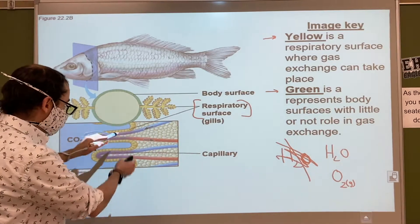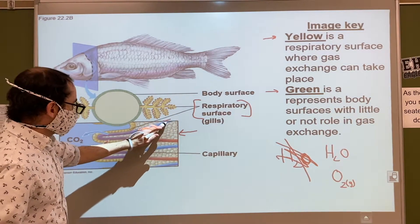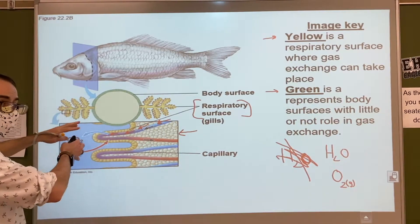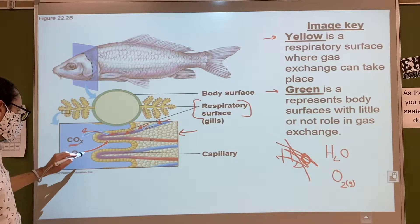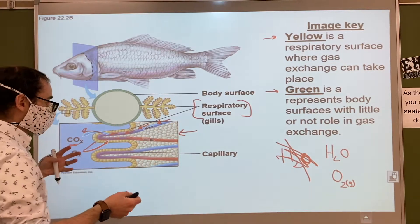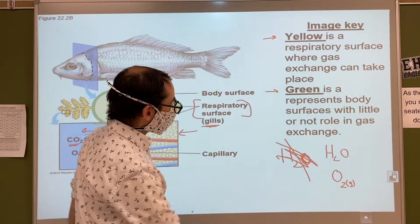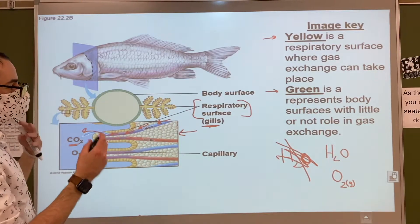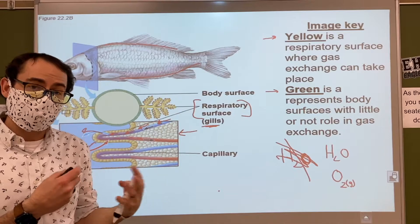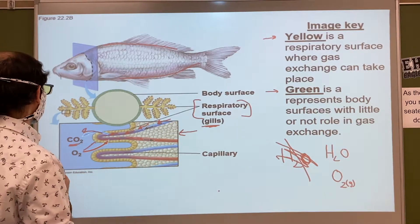All respiratory surfaces do the same thing — the earthworm, everything. They have carbon dioxide-rich blood going near whatever has the oxygen — air or water — dumping out the CO2, taking in the O2, and then taking that back to the heart to be pumped to the rest of the body. Fish have gills, and the green body surface has little or no role in gas exchange. You can get some gas exchange through your skin, but it is not efficient enough to give you the oxygen you need to survive.